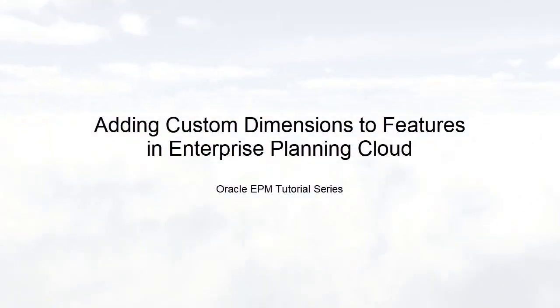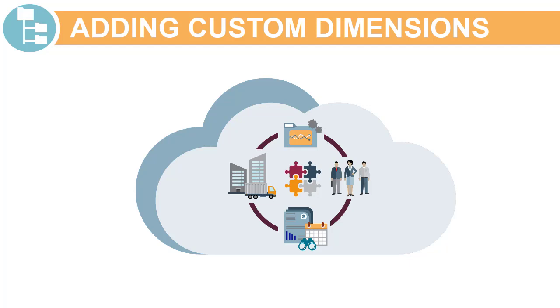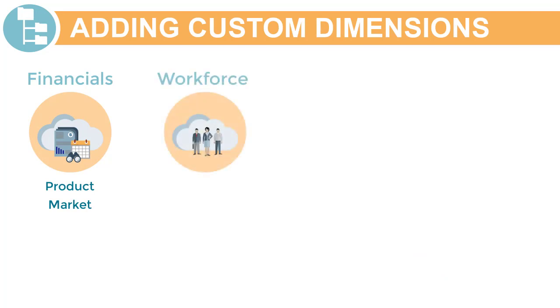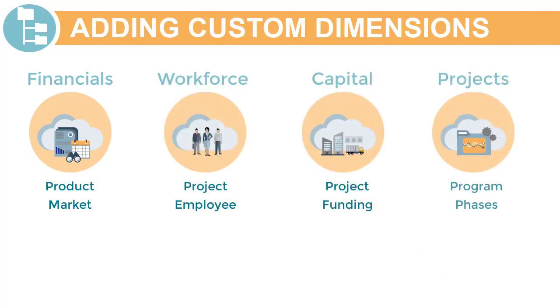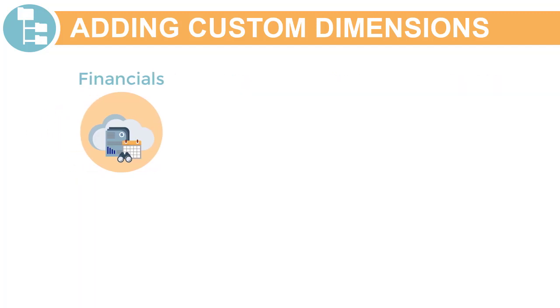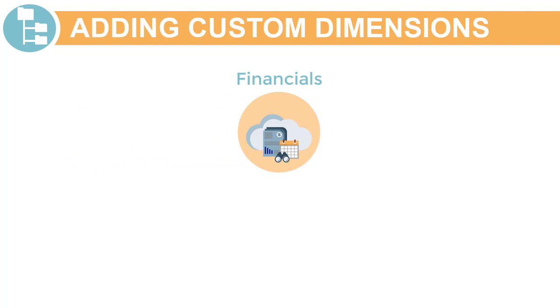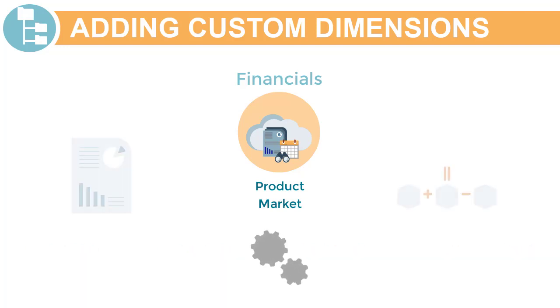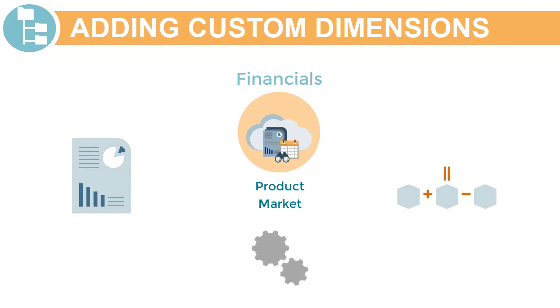In this tutorial, we'll show you how to add custom dimensions to features in Enterprise Planning Cloud. When you first enable features during Business Process Configuration, you can add custom dimensions. You must define all custom dimensions the first time you enable features for each of the business processes. You cannot define custom dimensions later. However, for the Financials business process, you can incrementally associate custom dimensions with additional features after you first enable features. When you run the enable process, custom dimensions are automatically added to forms and rules for features to which the custom dimension applies.